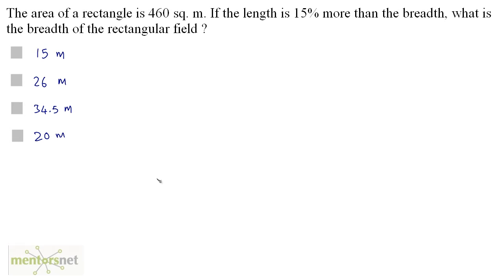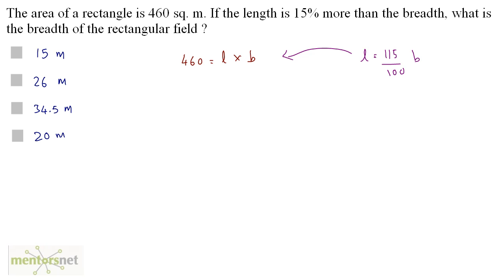The area of a rectangle is 460 square meters. If the length is 15% more than the breadth, what is the breadth of the rectangular field? Area equals length into breadth, so 460 equals length times breadth. The length is 15% more than the breadth, so length equals 115% of the breadth. Put this value of L into the equation to get the value of B: 460 equals 115B divided by 100, times B.